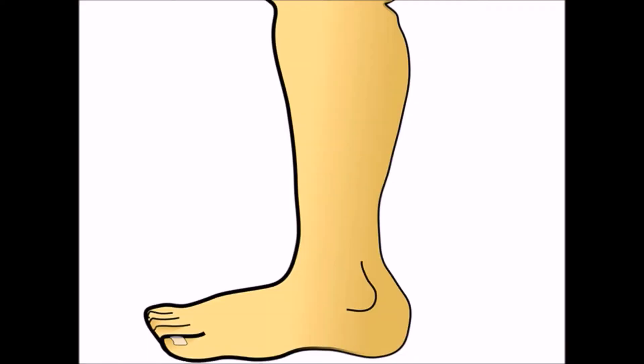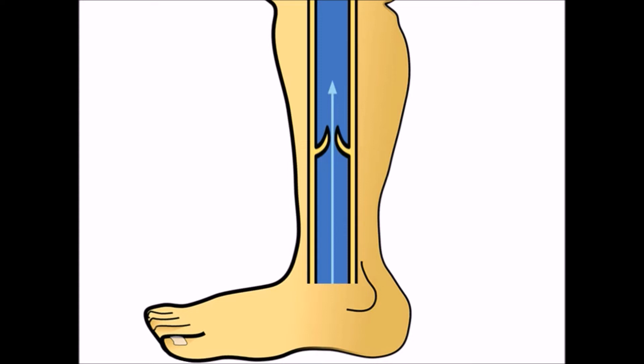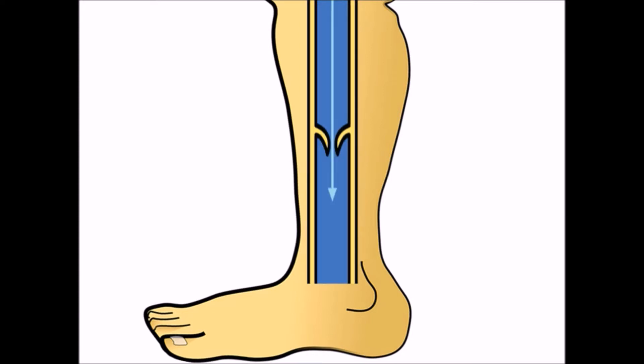Now let's see why this happens. Normally, blood from the legs moves upwards towards the heart through veins which have valves that allow blood flow upwards from legs towards the heart and do not allow backflow of blood. But in varicose veins, the valves are dysfunctional, allowing backflow of blood, resulting in varicose veins.